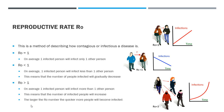If R-naught is greater than one, one infected person will infect more than one other person, meaning the number of infected people will increase. The larger the R-naught number, the quicker more people will become infected. With R-naught equal to 3, one infected person can infect three others, each of whom infects three more — producing what's called an exponential curve, where infections start increasing dramatically with time.